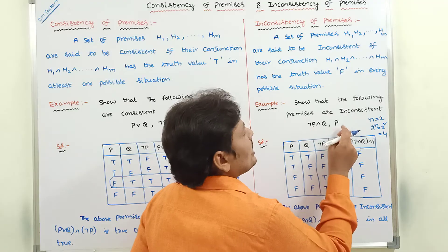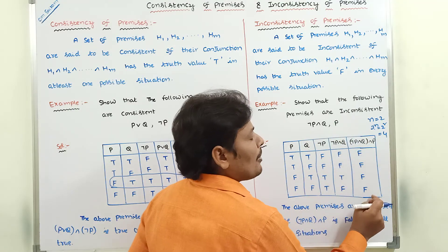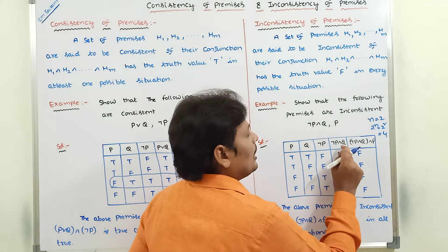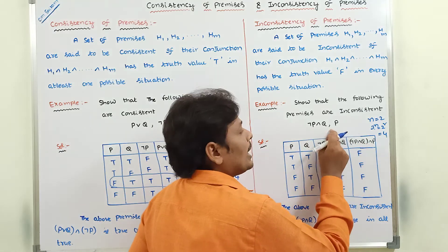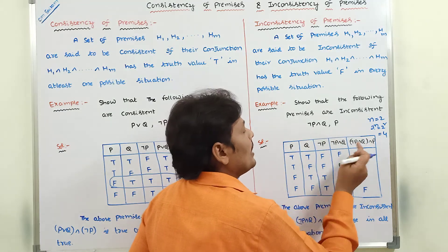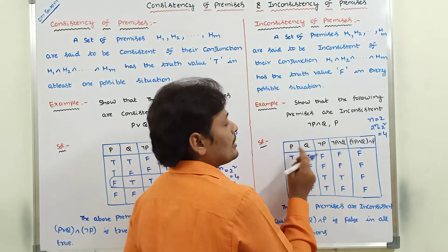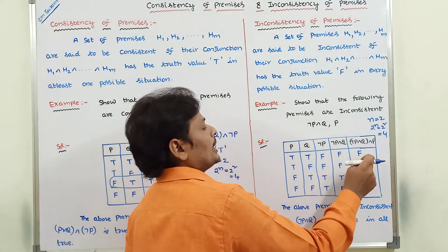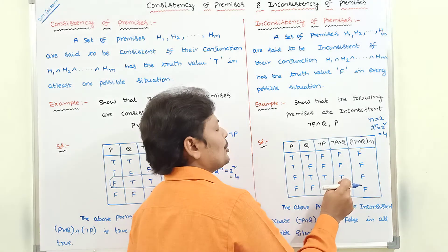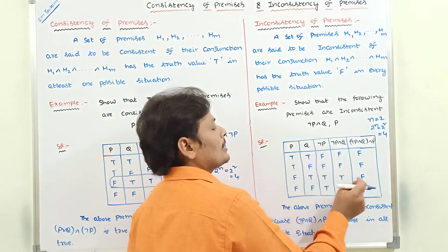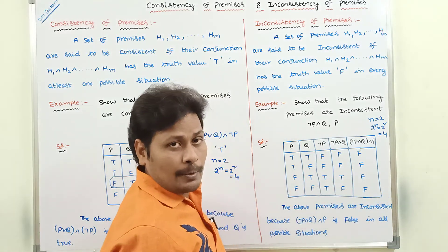In the last column of the truth table, I put the conjunction of the two premises: first premise ¬P∧Q, second premise P. So: false and true is false; false and true is false; true and false is false; false and false is false.